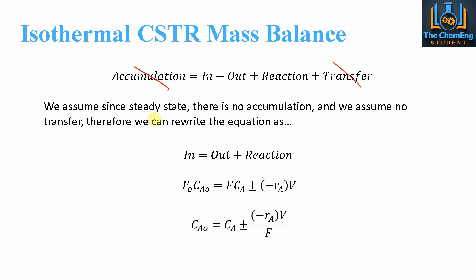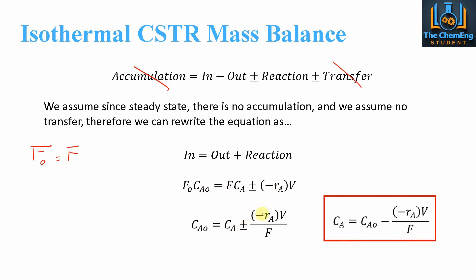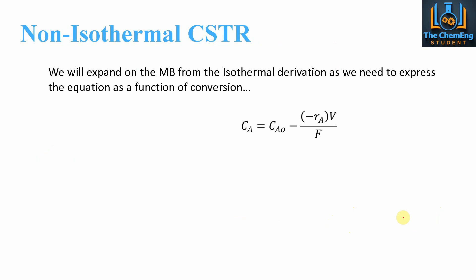Under steady state we can assume F0 equals F, so we can replace F0 with F. Dividing all three terms by F cancels the flow rate terms and we get: CA0 = CA ± (−rA·V)/F. Rearranging gives CA = CA0 − (−rA·V)/F. The V over F term has a special name that will feature at the end of this video, so make sure you watch all the way to find out more about this V over F term. That is essentially the isothermal mass balance.